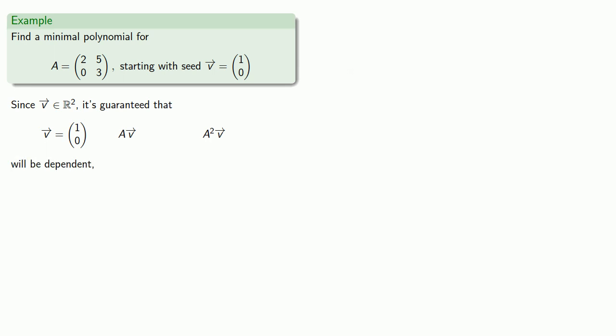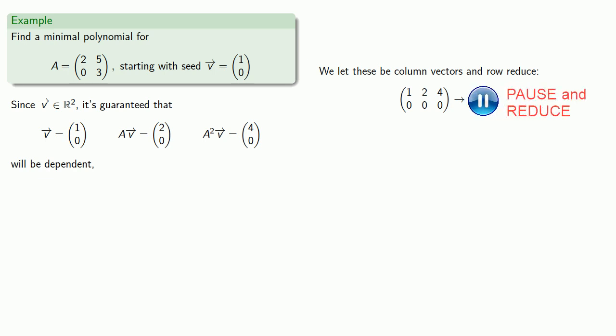So let's find those vectors. AV is... And A squared V is... We'll let these be column vectors and row reduce. And so x_2 and x_3 are free variables, giving us a parameterized solution.